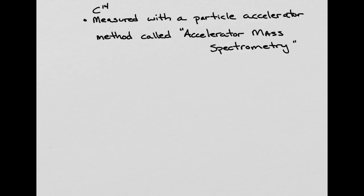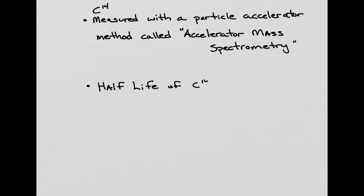C14 is measured with a particle accelerator in a method called accelerator mass spectrometry. There are several other ways of estimating the amount of carbon-14 in an object, but we're going to focus on AMS. When you do your readings, they will introduce you to a few other methods. Now, the answer you've all been waiting for: the half-life of radiocarbon is 5,730 years. That means that after 5,730 years, approximately half of the radioactive material will have decayed into a stable form.